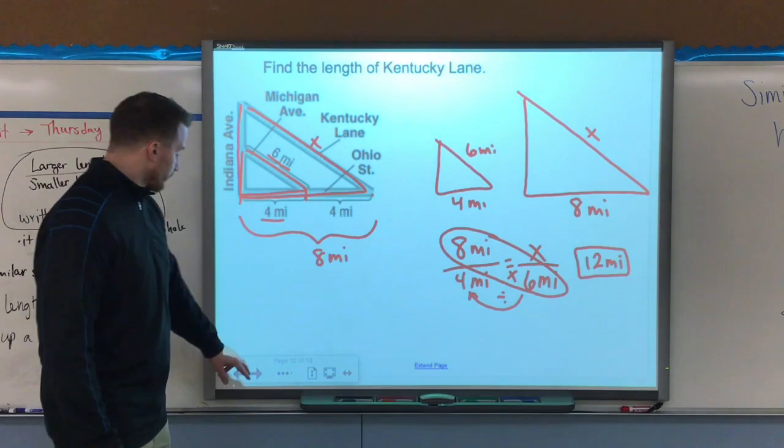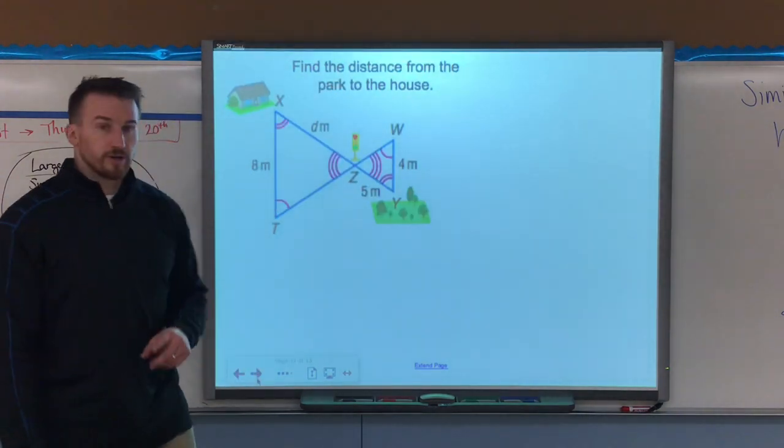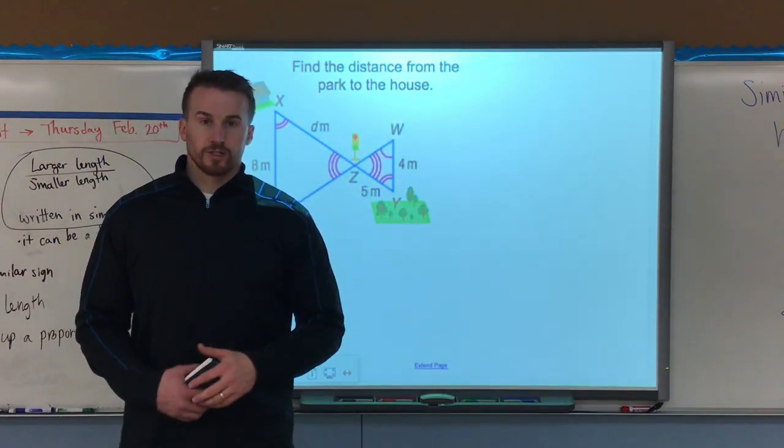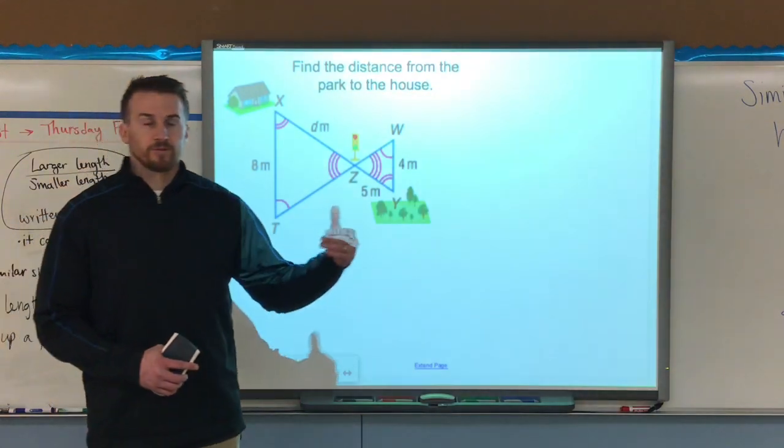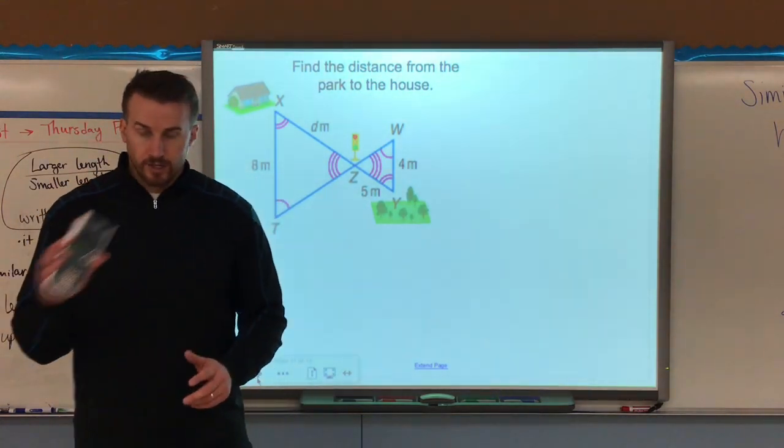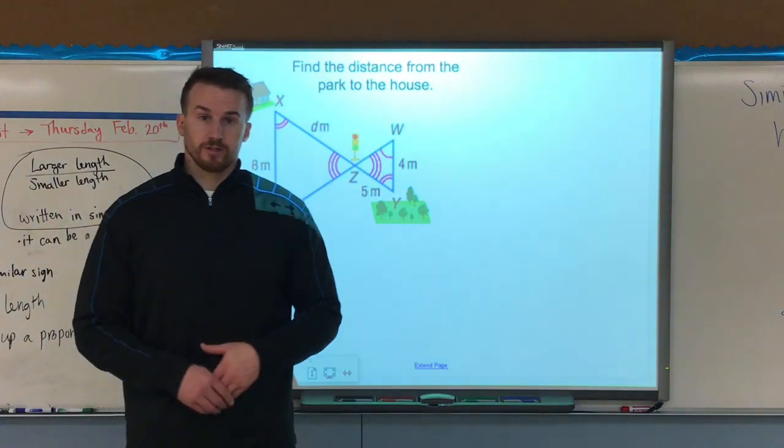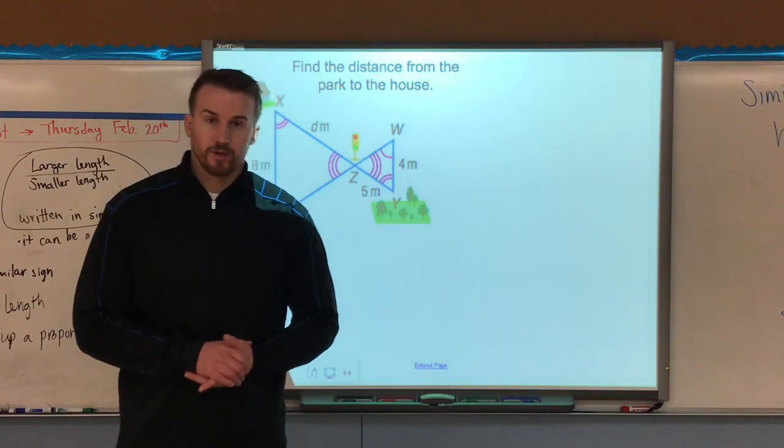So now, there's one more example. This one here, you're going to do on your own. Make sure you understand that you need a separate proportion to find the missing value. Cross multiply and divide. Use a calculator. If you get stuck, make sure you ask your teacher. That's it for indirect measurement. See you next time.